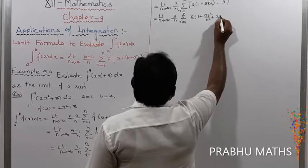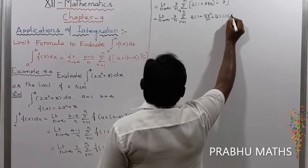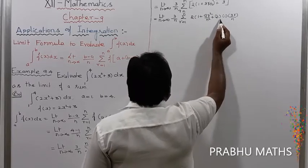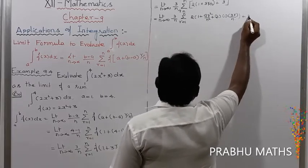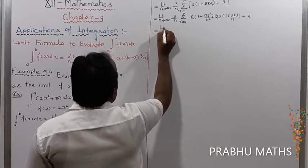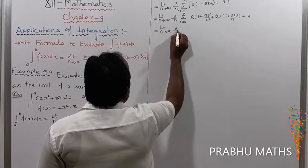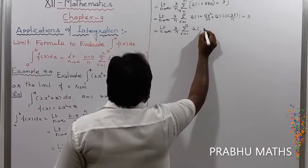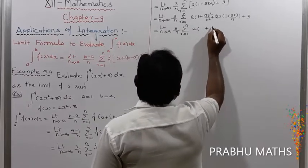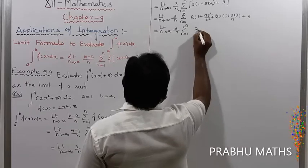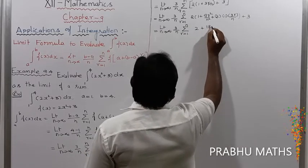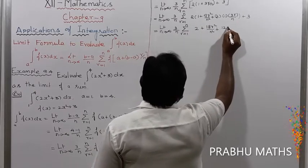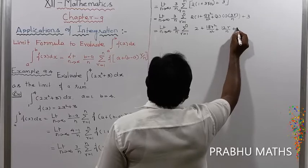Using (a+b)² expansion: a², 2ab, b². The expression becomes limit n tends to infinity of 3 by n, summation r from 1 to n, of 2 plus 18r²/n² plus 12r/n plus 3, which simplifies to 5 plus 18r²/n² plus 12r/n.